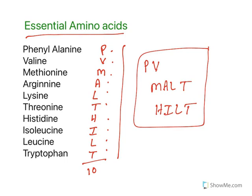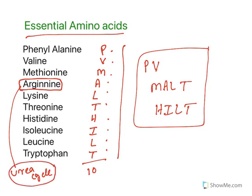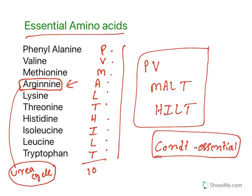In this essential amino acid list, some sources consider arginine as non-essential because arginine can be synthesized in the human body. But the problem is arginine is utilized in the urea cycle, so whatever is synthesized is mostly consumed there. Human body does not have enough arginine, so it is sometimes called conditionally essential. In young children when their metabolic rate is very high, the arginine synthesized in the body is not enough, so they need arginine from diet as well. Majority of books consider it an essential amino acid.